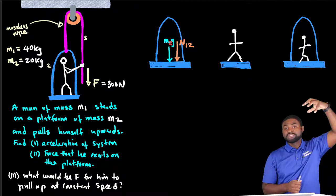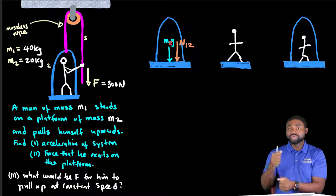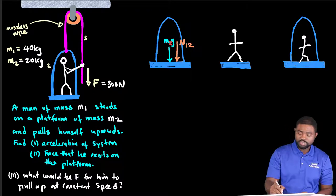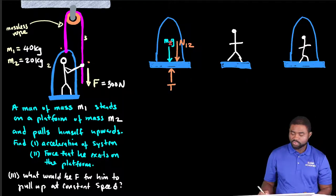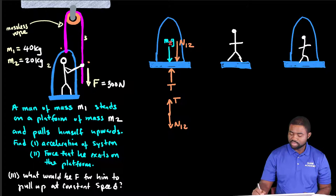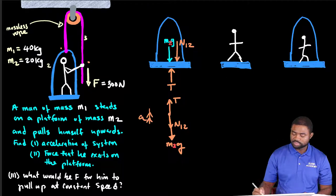The platform is tied to a rope and he pulls the rope downwards, asserting a tension force upwards. That tension force is transmitted from where he pulls the rope onto the platform. So we have a tension force T acting upward on the platform. Translating our diagram: tension acts upwards, the normal force from the man acts downwards, and the weight of the platform acts downwards. The system is accelerating upwards.